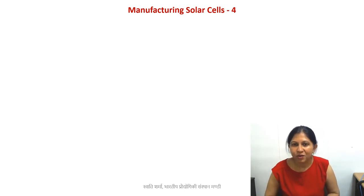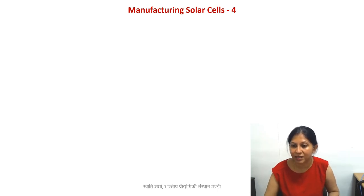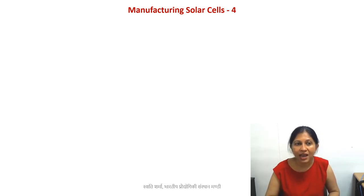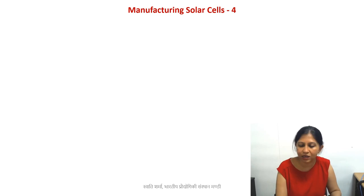Hello everyone. This is our fourth lecture on the manufacturing of solar cells. In the previous lectures, we learned a few fundamental things about how to make a silicon wafer — a single crystal silicon wafer. We also learned about some initial steps of solar cell manufacturing: we start with a p-type wafer and dope it with an n-type material using phosphorus to create a p-n junction. We use phosphorus precursors, either liquid or gas phase, for this doping. After that, a phosphosilicate glass layer also develops, and we clean that.